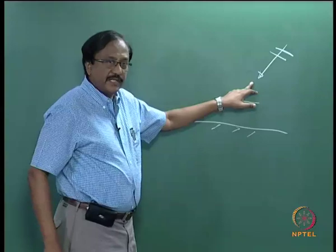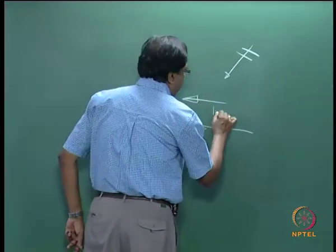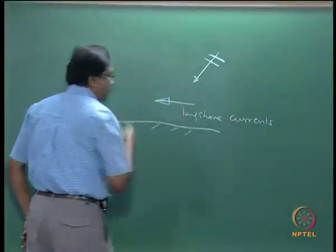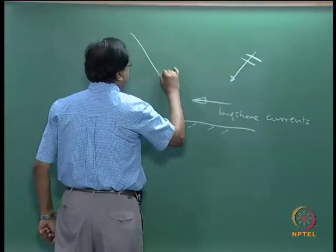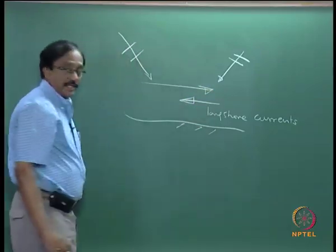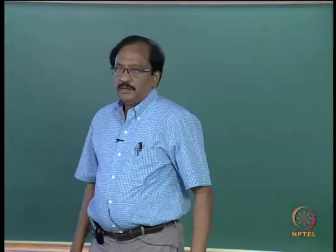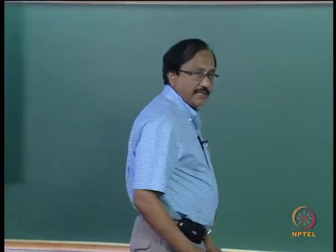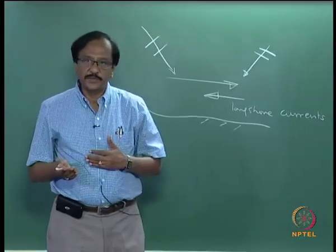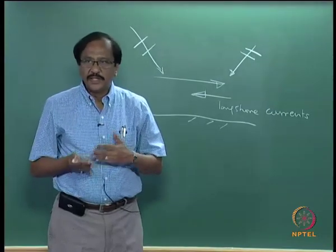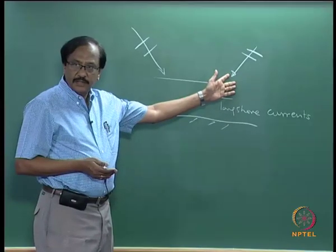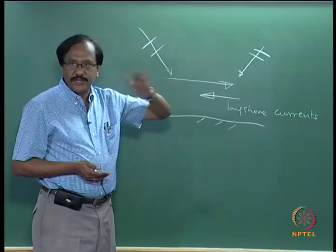If the wave breaks at a particular angle, naturally your longshore currents will be in that direction. If you have the angle in a different direction, then you would have the current in that direction. This clearly implies that along the east coast, since you have two monsoons — that is, northeast and southwest monsoon — the direction of the littoral drift is mainly governed by the monsoons.